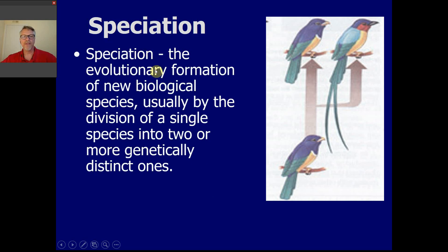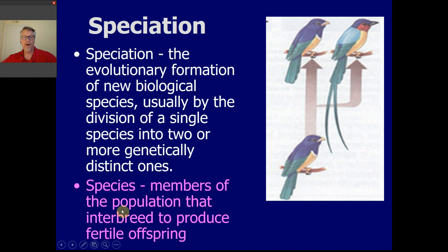Alright, so definition time, vocab term. Speciation is the process of making new species where usually one species separates, evolves into two distinct species that can no longer interbreed with one another. Remember the definition of a species, members of a population that can interbreed to produce fertile offspring. Once a speciation event has occurred, you end up with two or more new species that can no longer interbreed. That's how you can tell they're new and distinct species.